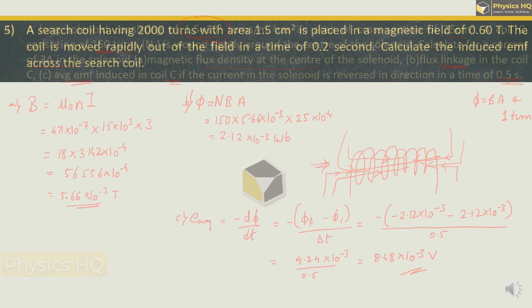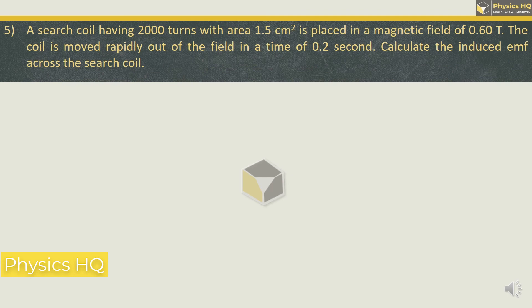Hope you all understood this. Let us check out the next problem. A surge coil having 2000 turns with area 1.5 cm² is placed in a magnetic field of 0.6 tesla. The coil is moved rapidly out of the field in a time of 0.2 seconds. Calculate the induced EMF across the surge coil.